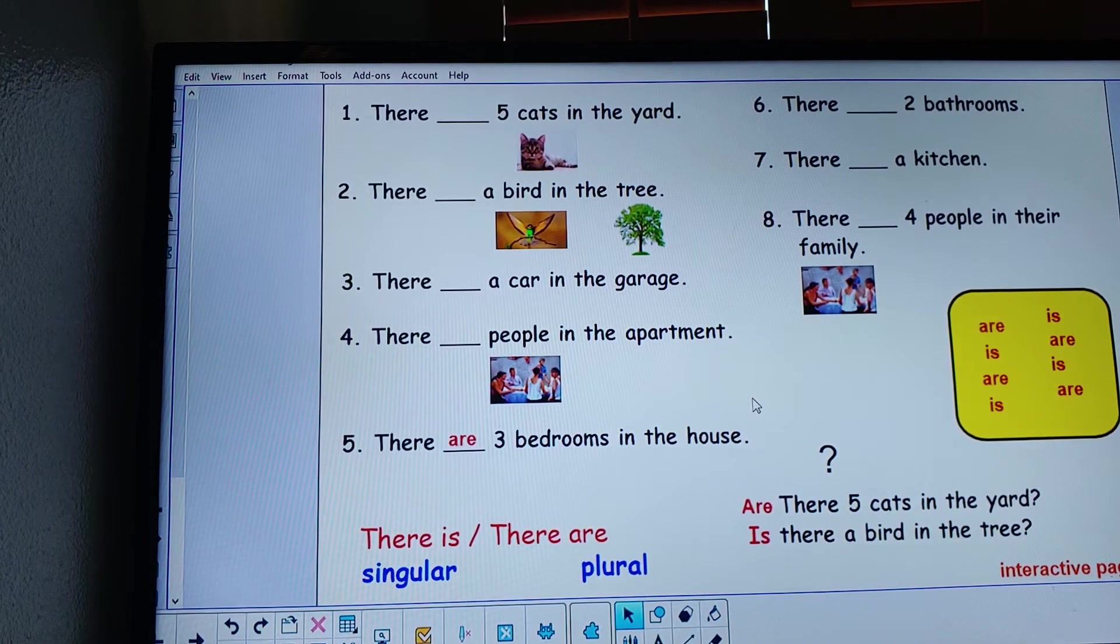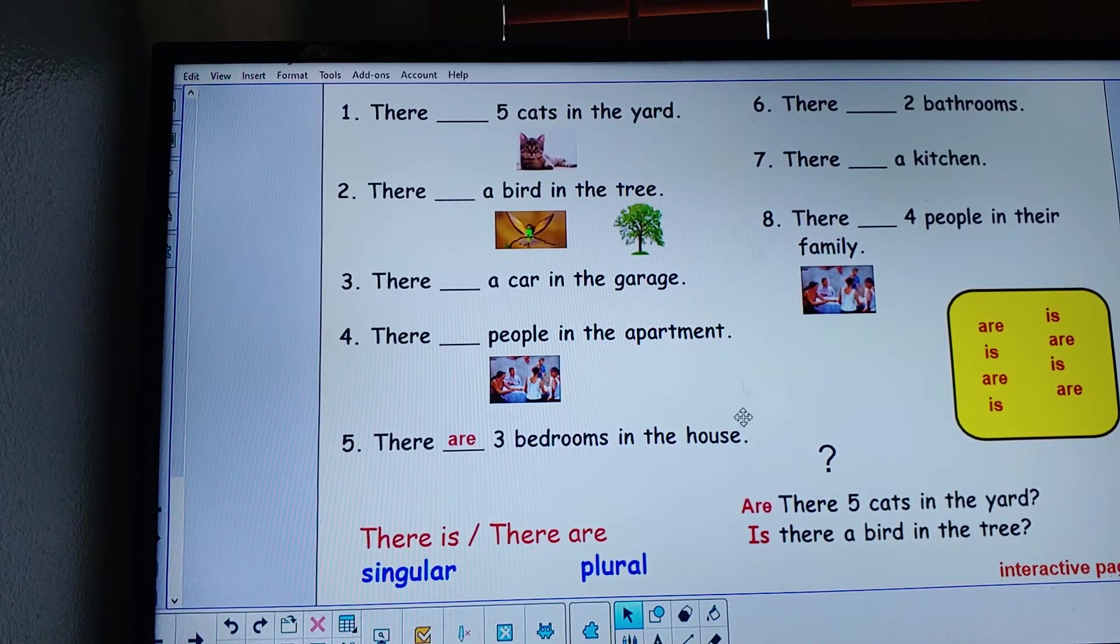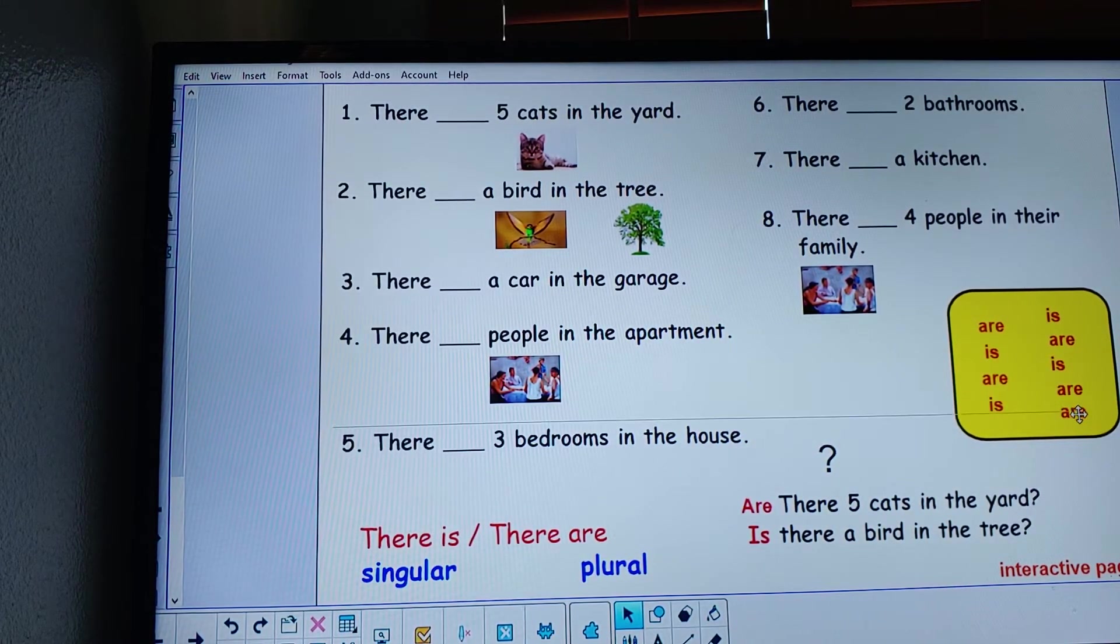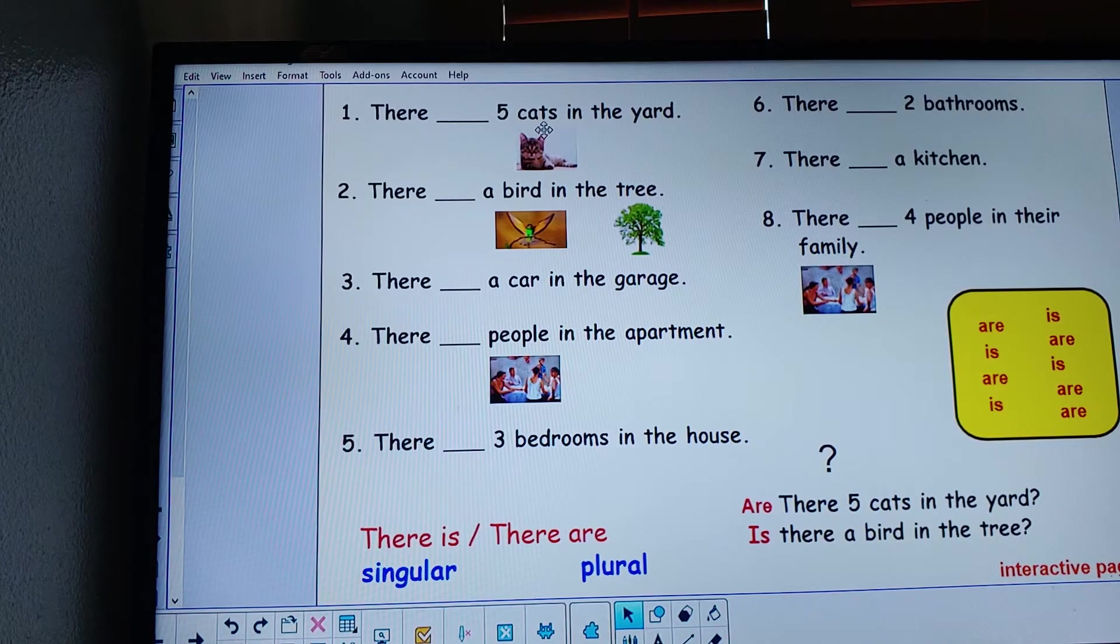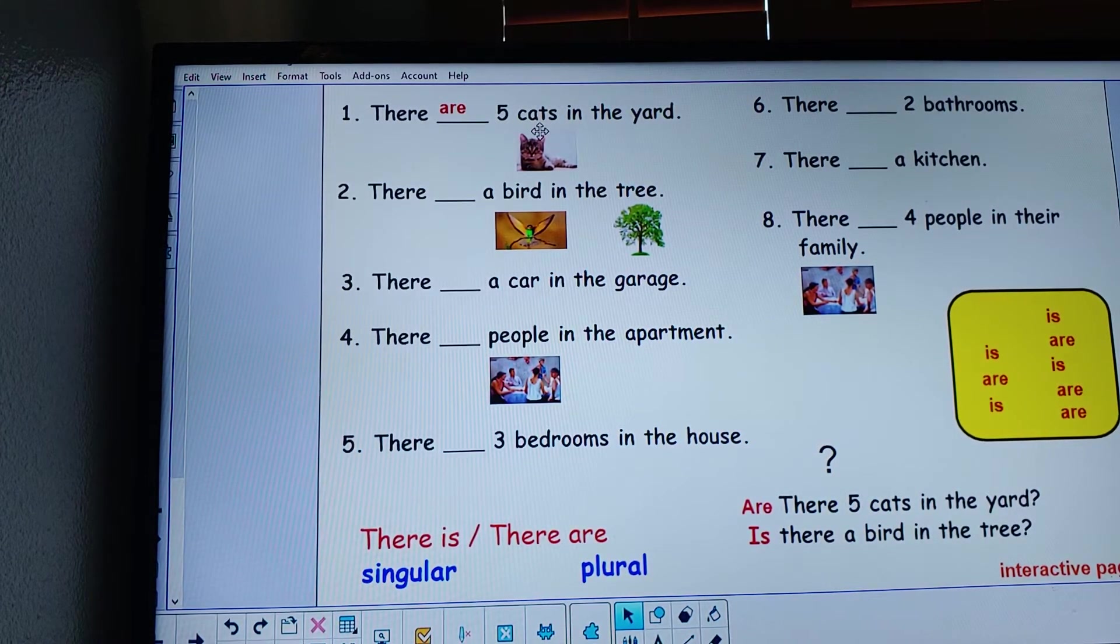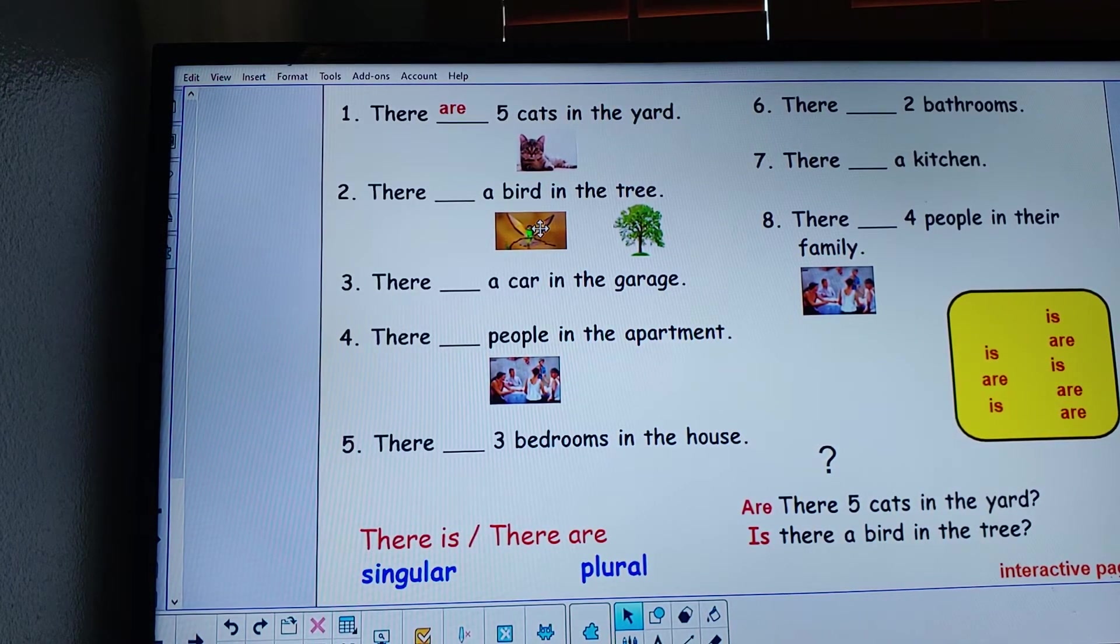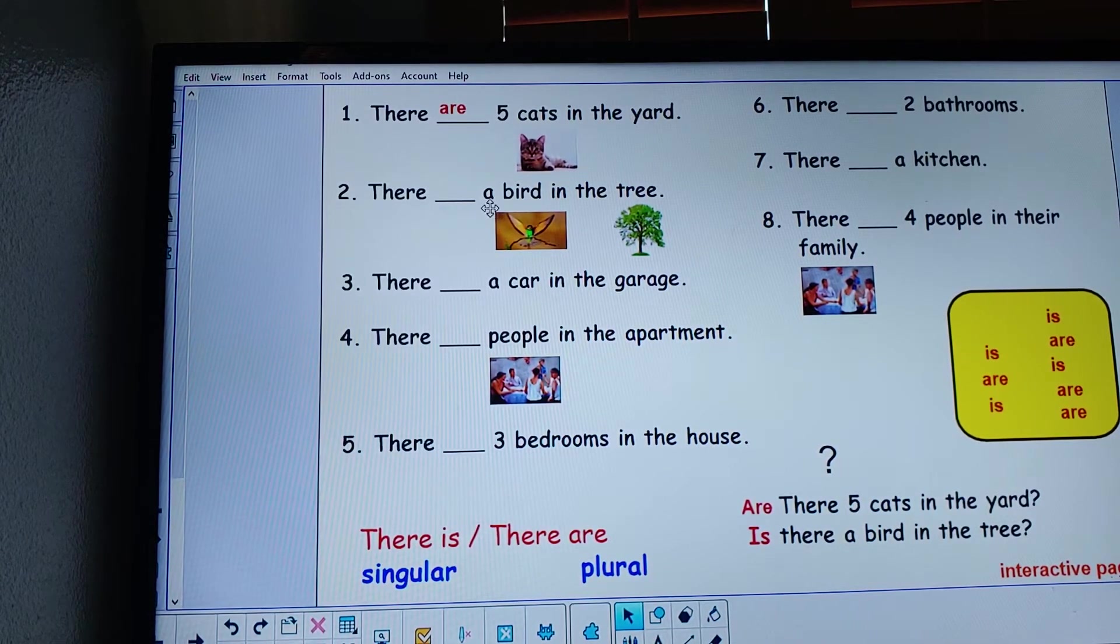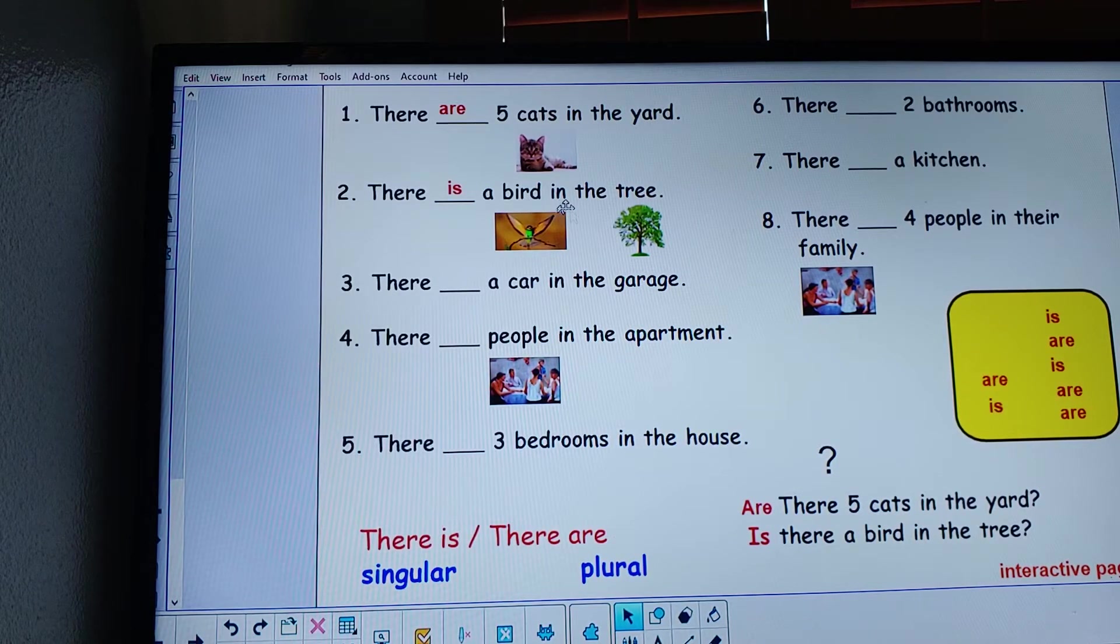We're going to look at the difference between singular and plural. Five cats. Plural. We use are. There are five cats in the yard. Bird. Tree. A bird. One. There is one bird. There is a bird in the tree.